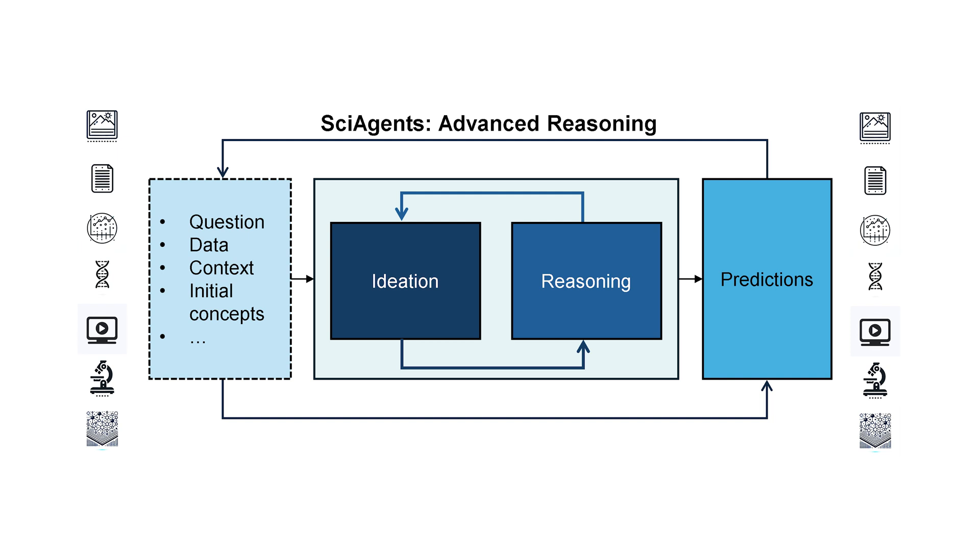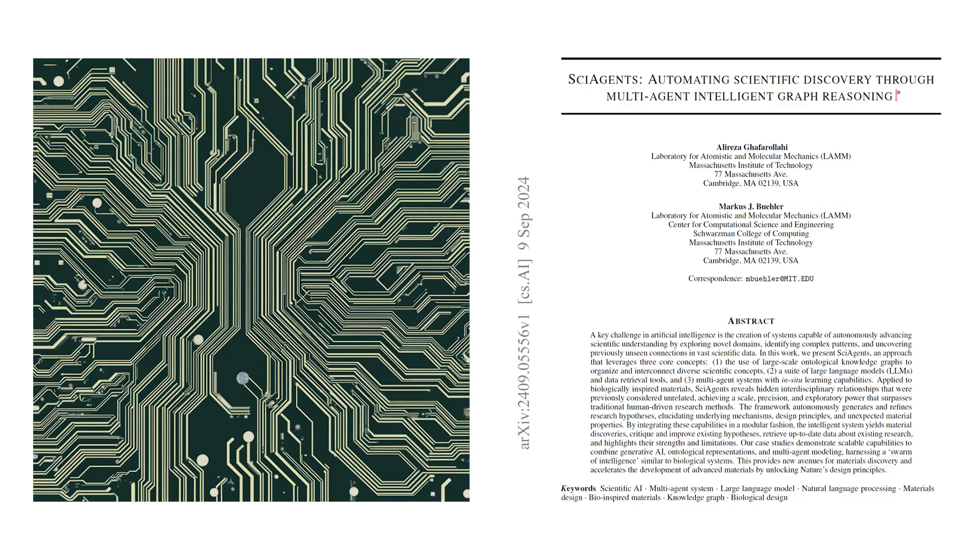I imagine this could significantly speed up the research process. Definitely. Traditional research can be time-consuming, often requiring extensive literature reviews and experiments. SciAgents can automate much of this, freeing up human researchers to focus on other aspects. Are there other examples of discoveries made by SciAgents? Yes. Another example involves developing biomimetic microfluidic chips inspired by the lamellar structures found in certain biological materials like keratin scales.